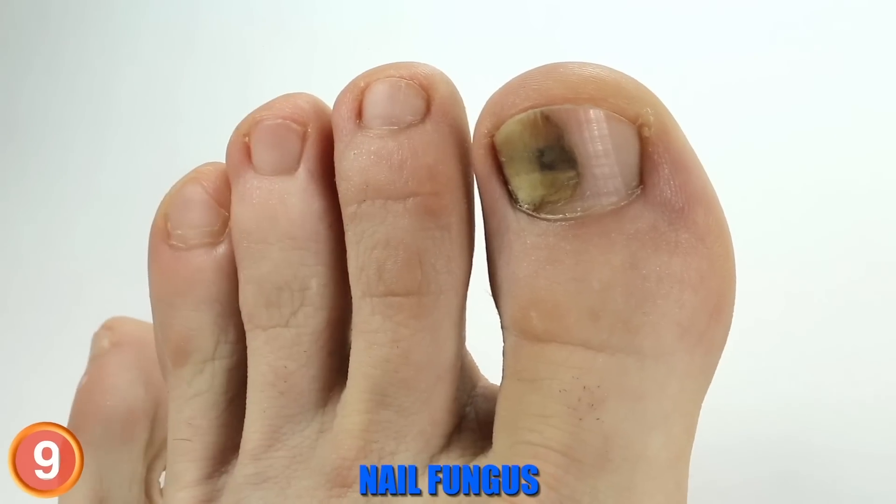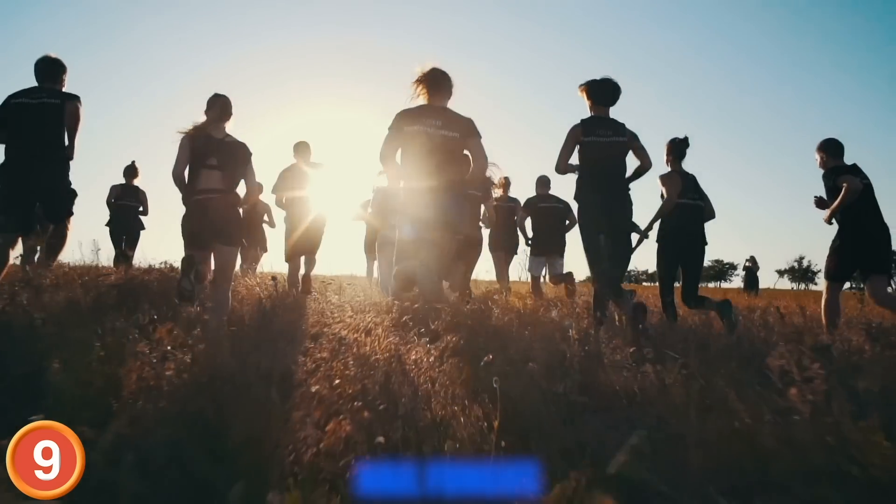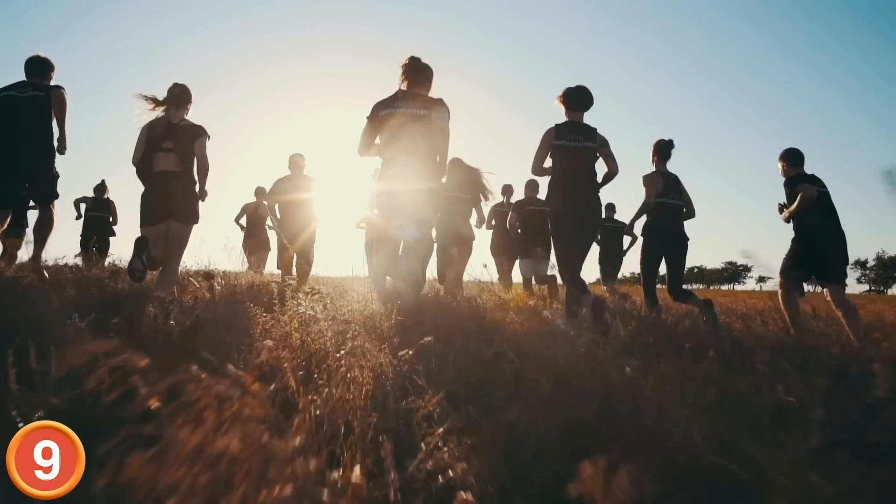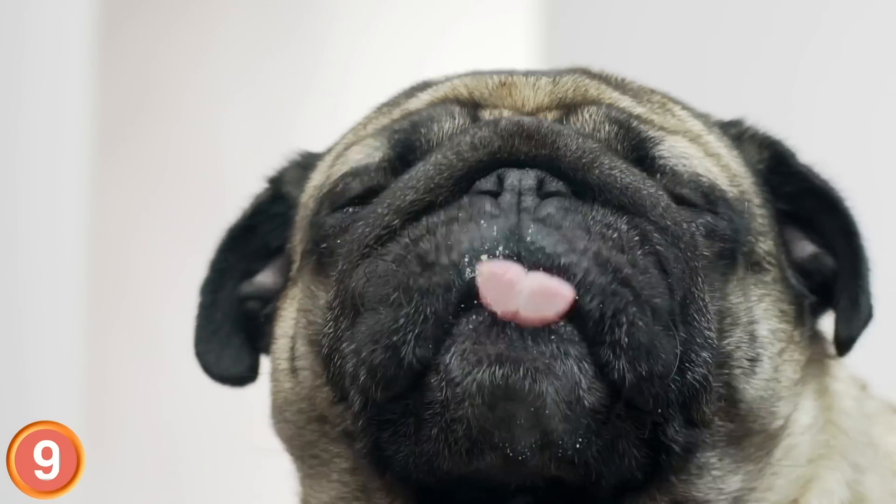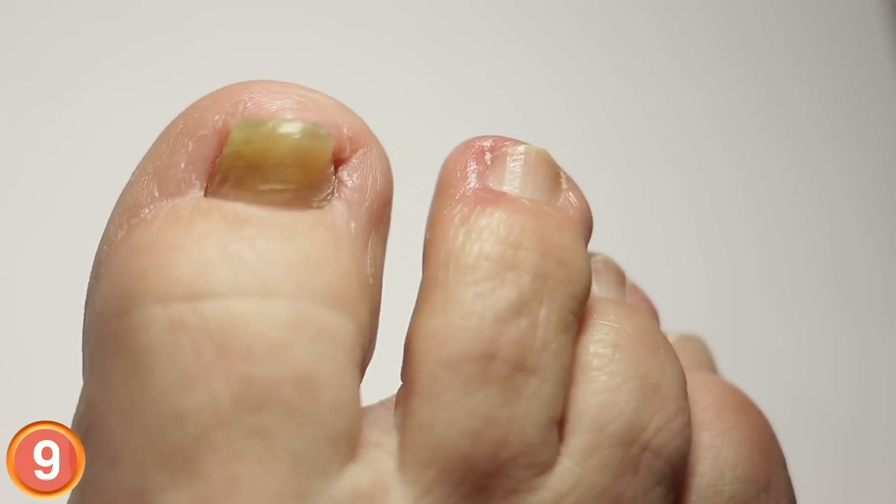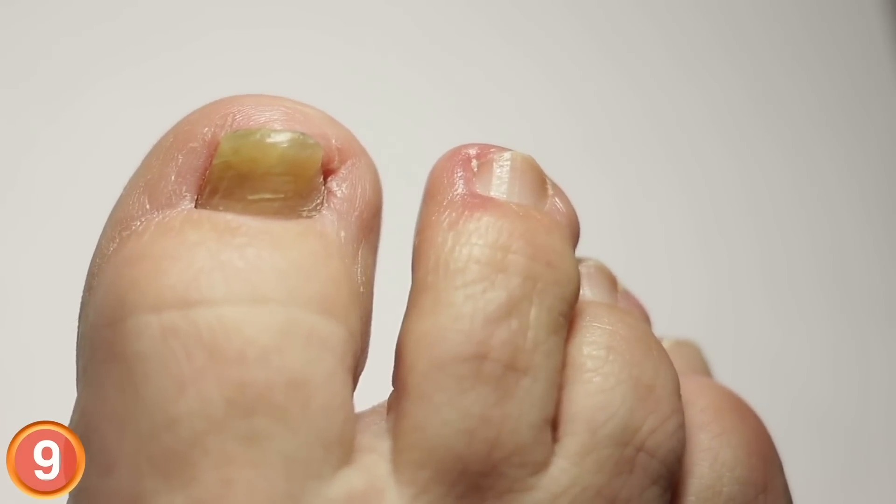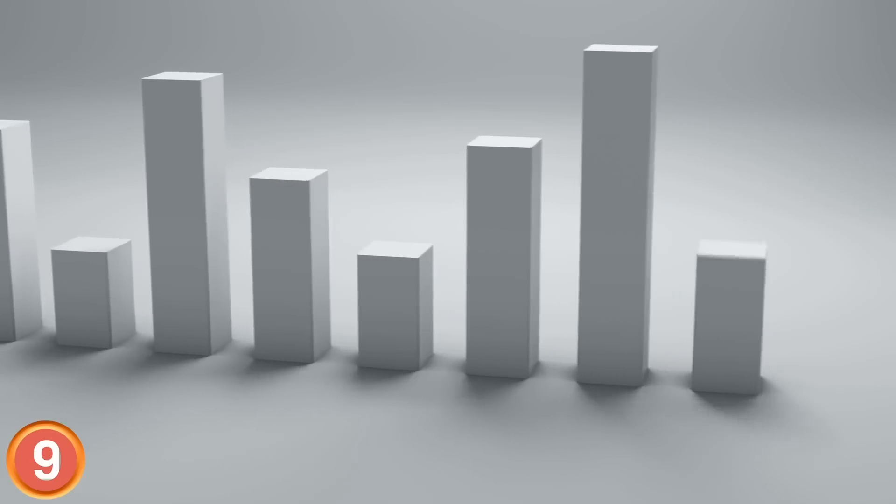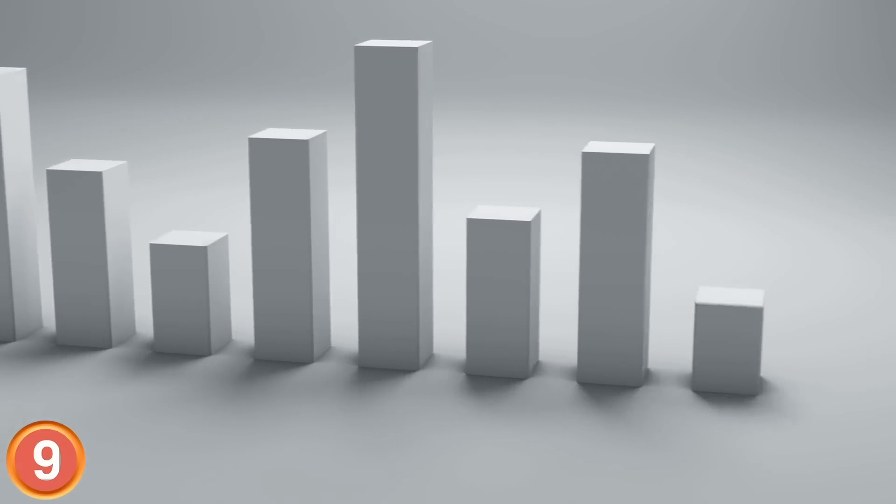Number 9. Fungi. Nail fungus is a common occurrence among people of all ages. It's a condition known by the tongue-twisting name of onychomycosis, which starts as a yellow or white spot beneath the nail. Statistically, it accounts for more than half of all nail diseases.